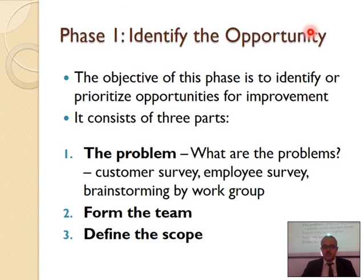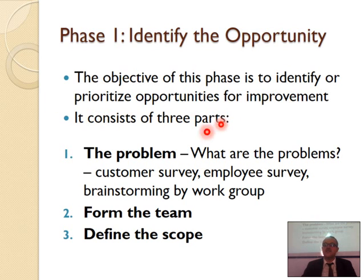Phase one: you identify the opportunity. The objective of this phase is to identify priorities and opportunities for improvement. It consists of three parts: a problem, you form the team, and you define the scope.